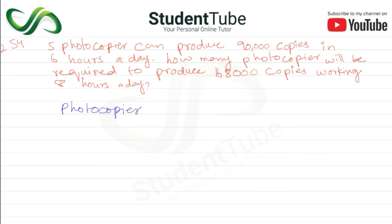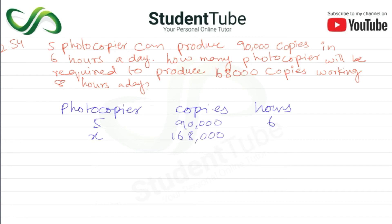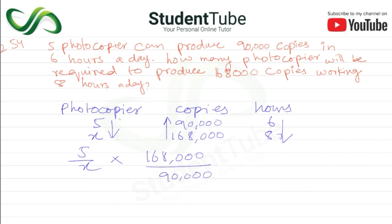We write the table: photocopiers, copies, and hours. Photocopiers = 5, copies = 90,000, hours = 6. We need to find X photocopiers for 168,000 copies working 8 hours. Looking at the relationships: photocopiers are not inverse — they remain direct. So the equation is: 5 upon X multiplied by 168,000 upon 90,000 multiplied by 6 upon 8, and X comes to one side.